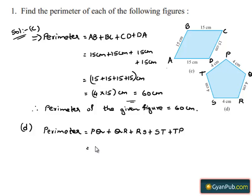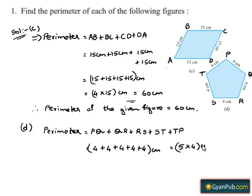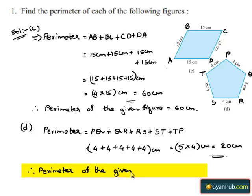This implies 4 plus 4 plus 4 plus 4 plus 4 centimeters. Since 4 is added five times, this implies 5 times 4 centimeters, which gives 20 centimeters. Therefore, the perimeter of the given figure D is equal to 20 centimeters.